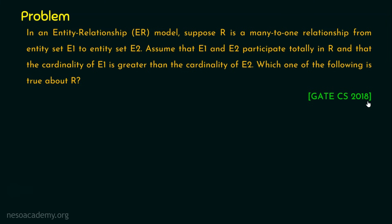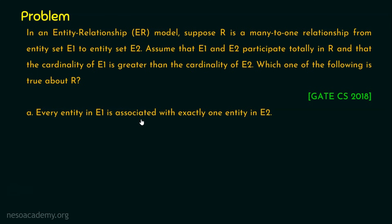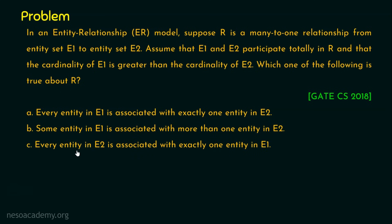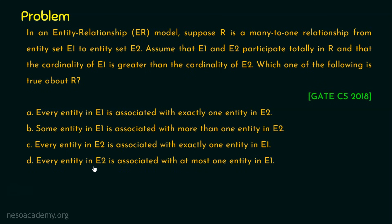Let's see the options. Option A: every entity in E1 is associated with exactly one entity in E2. Option B: some entity in E1 is associated with more than one entity in E2. Option C: every entity in E2 is associated with exactly one entity in E1. Option D: every entity in E2 is associated with at most one entity in E1.